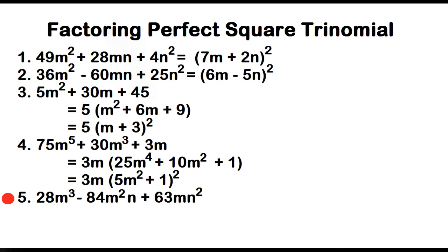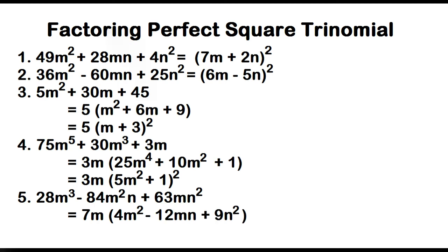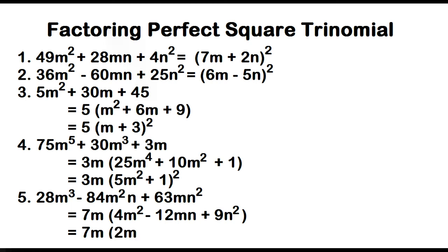Example number five: 28m cubed minus 84m squared n plus 63mn squared. Again, this is not a perfect square trinomial, but if you factor out the greatest common monomial factor, the other factor is a perfect square trinomial. The greatest common monomial factor is 7m, and the other factor is 4m squared minus 12mn plus 9n squared, which is a perfect square trinomial. The square root of 4m squared is 2m, and the square root of 9n squared is 3n. The factors are 7m and the square of the quantity 2m minus 3n.